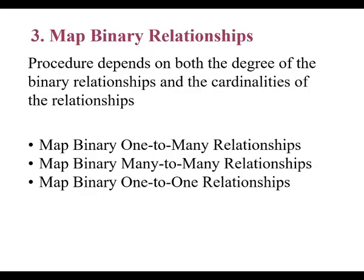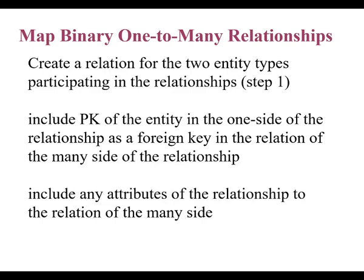In general, with people databases, people will find a way to break just about any business rule you set. Now, binary relationships — binary means between two entities — one-to-many, many-to-one, one-to-one. The best way to show this is to map a binary one-to-many relationship. For example, this would be like department and employees: a department has many employees, and employees are generally assigned to one department.